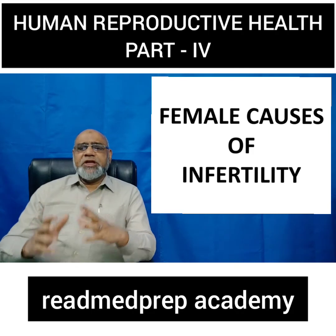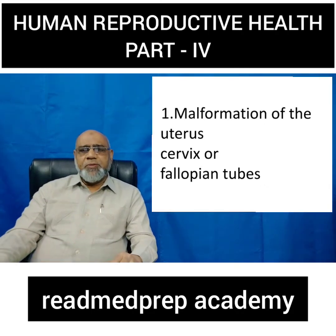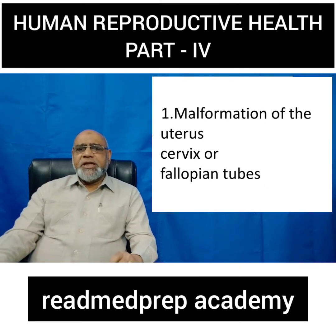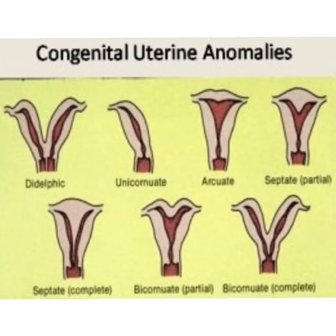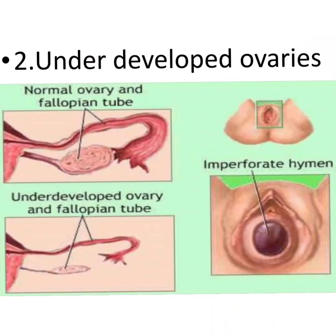What are the female causes of infertility? Number one is malformation of the uterus, cervix, or fallopian tubes. Congenital uterine anomalies include didelphic uterus, unicornuate uterus, arcuate uterus, septate uterus (partial or complete), and bicornuate uterus (partial or complete). These congenital anomalies cause difficulty in impregnation or implantation of the ovum into the endometrium.